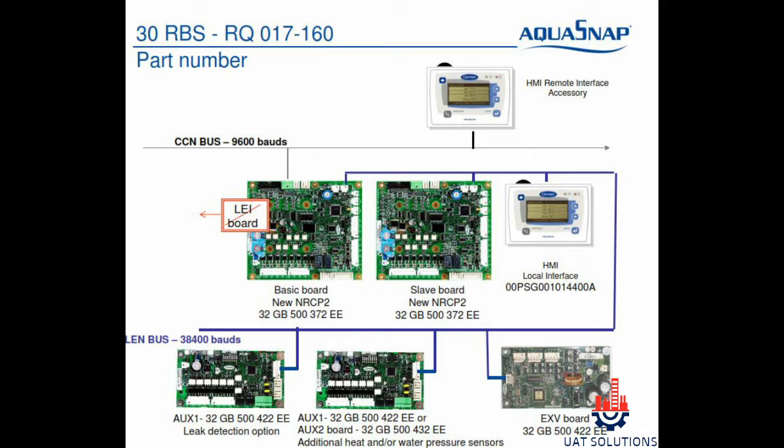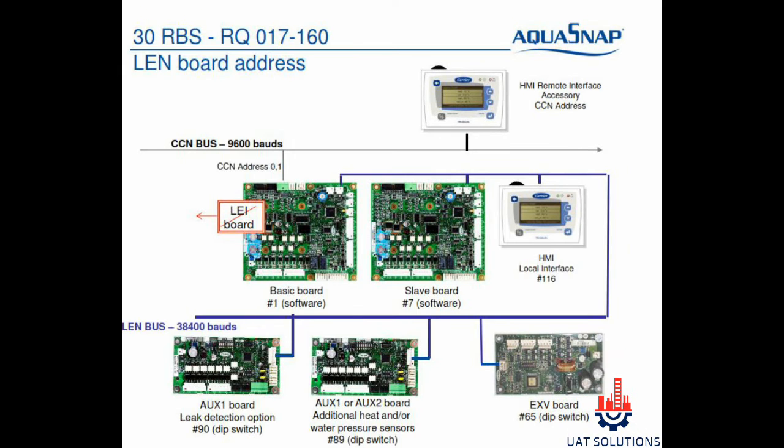Part numbers of all the boards used in Carrier 30RBS and RBQ chiller are as shown. All board addresses are shown. The NRCP2 board and HMI local interface address is set via software, whereas auxiliary boards and expansion valve boards can be addressed using DIP switches.